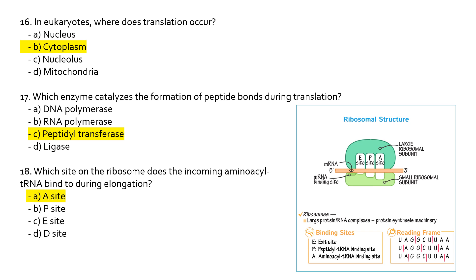Which enzyme catalyzes the formation of peptide bonds during translation? Peptidyl transferase forms the peptide bond between two amino acids, helping build the protein structure. Which site on the ribosome does the incoming amino acid tRNA bind to during elongation? The A site is where tRNA binds. The peptidyl transferase enzyme facilitates codon-anticodon matching, and the empty tRNA exits through the E site — that is how the A, P, and E sites of the ribosome work.